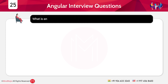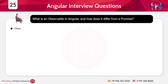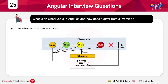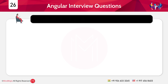The twenty-fifth question: What is an Observable in Angular and how does it differ from a Promise? Observables are asynchronous data streams that allow multiple values over time, whereas Promises resolve a single value.